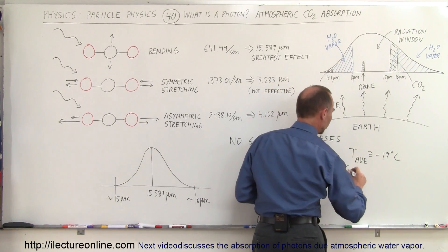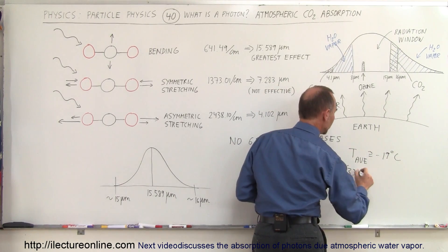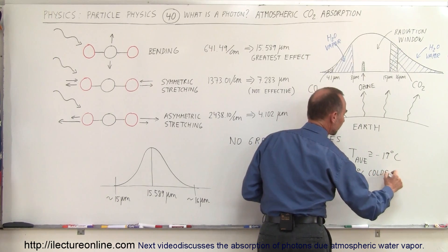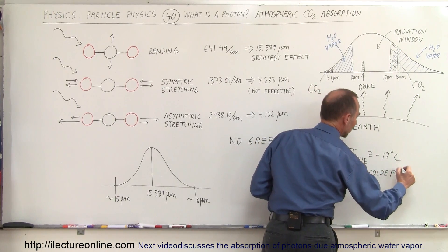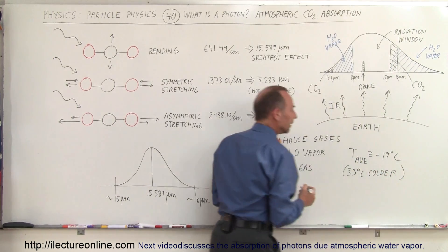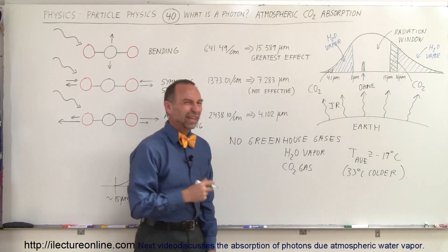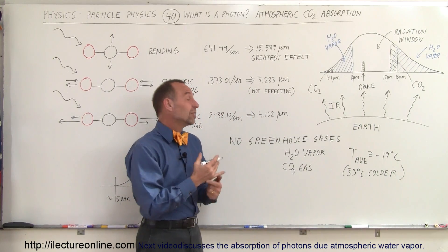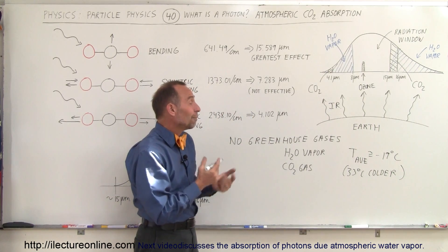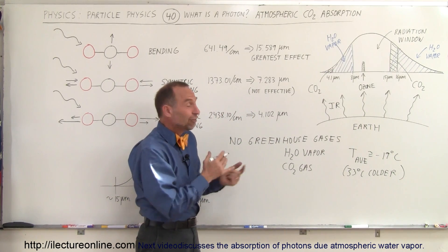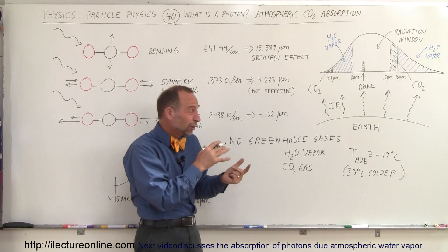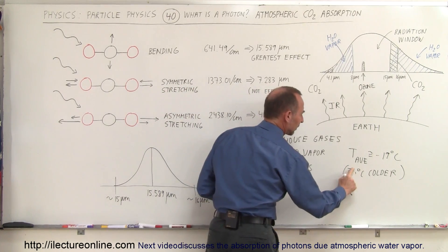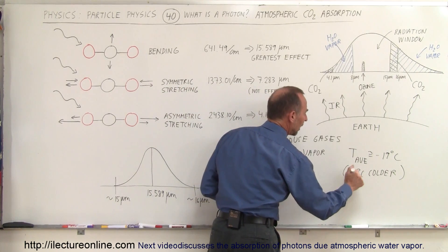That's about 33 degrees centigrade colder than it is today. The average temperature in the world today is around 15 degrees centigrade, so minus 19 to 15 is about 34 — the number typically used is about 33 degrees, which is what they typically use.